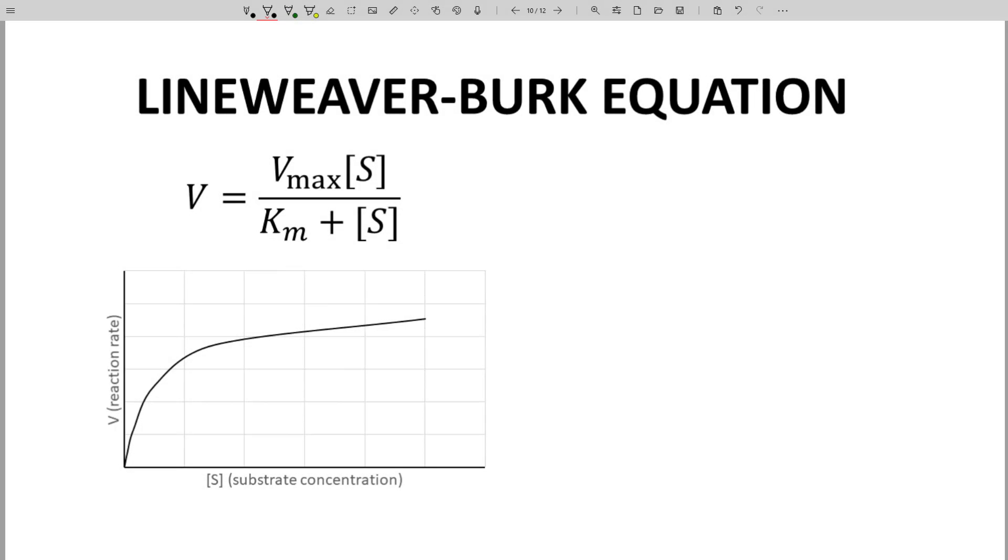On the left is a V versus S-plot from a previous video along with the Michaelis-Menten equation. This is great, but it's kind of hard to figure out exactly what Km and Vmax are from the graph.